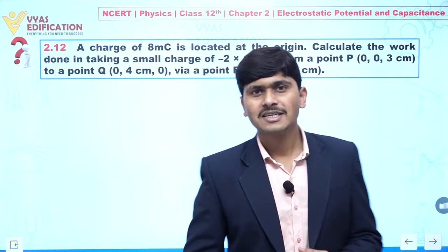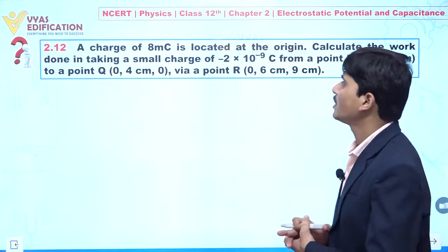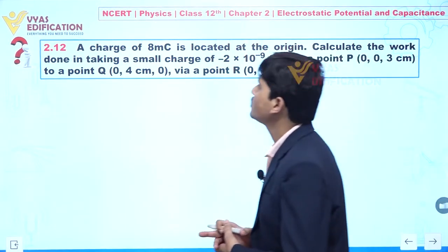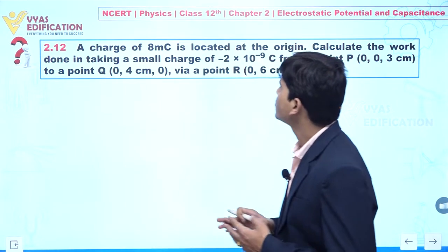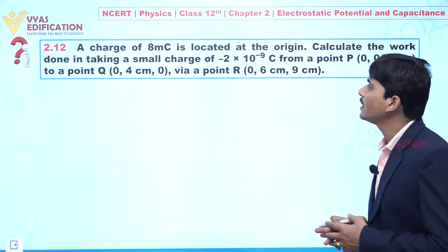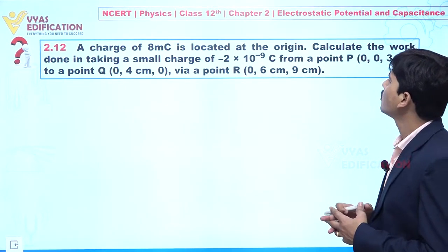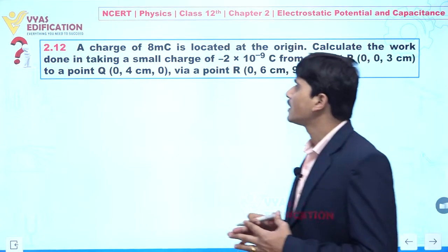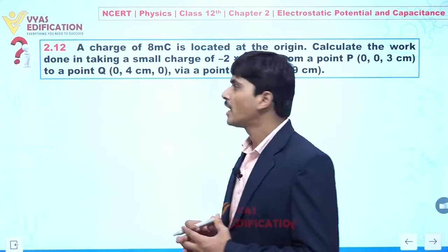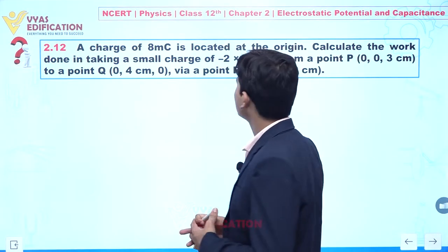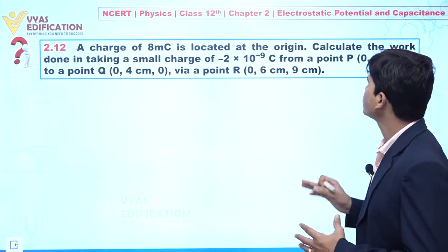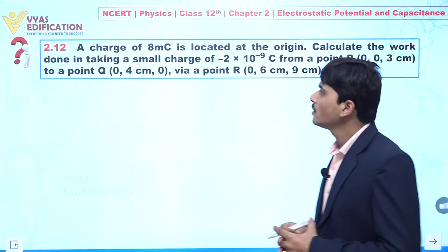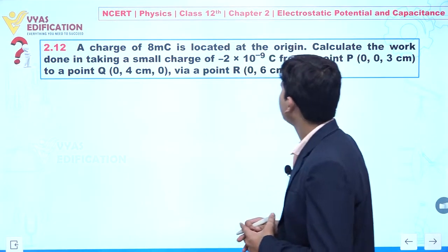We are going to discuss question number 2.12. In this question, a charge of 8 milli coulomb is located at the origin. Calculate the work done in taking a small charge of minus 2 into 10 to the power minus 9 coulomb from a point P to a point Q.